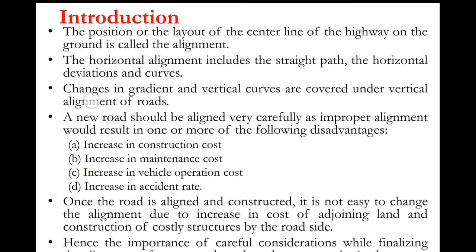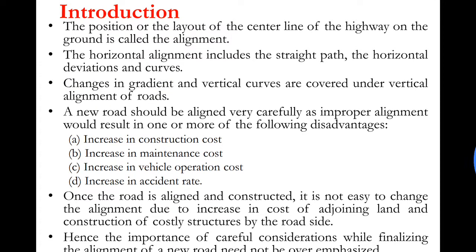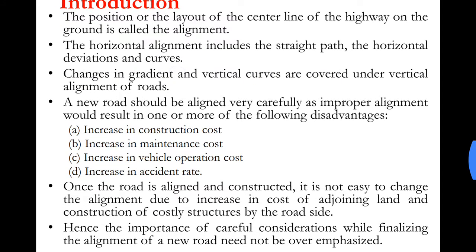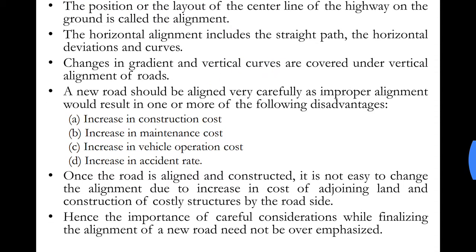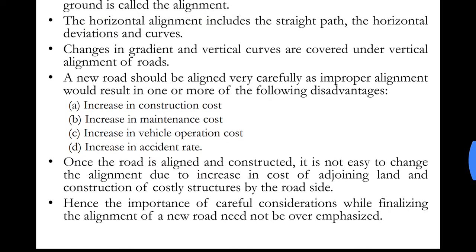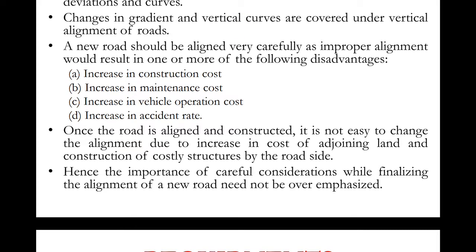Under vertical alignment, changes in gradient and vertical curves are covered. Gradient is the rise or fall of the existing road in the direction of movement — it may be a positively inclined or negatively declined slope. Vertical curves are smooth curves used to join any two gradients. These will be studied in detail in module 2.